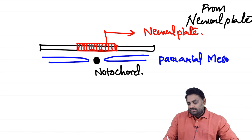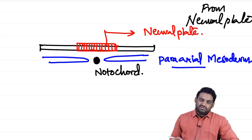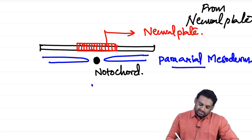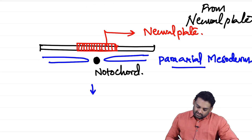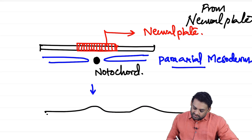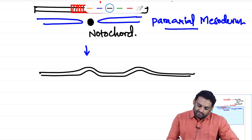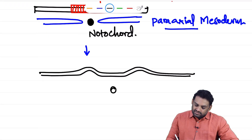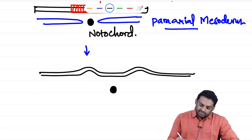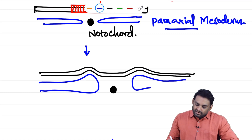In the later stages, the paraxial mesoderm grows upward and pushes the surface ectoderm. You can see in this picture — the paraxial mesoderm is pushing the surface ectoderm from below, while the notochord remains in the center.